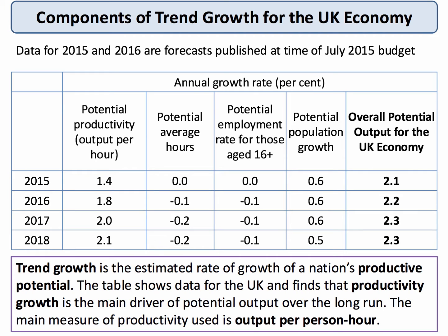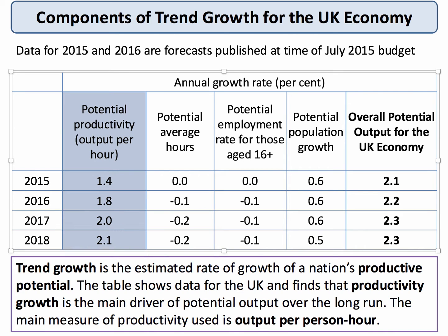Here's some data for the UK economy, which gives us some important clues. The trend growth of the UK can be broken down into basically its four main component parts. One of the key causes of growth of potential GDP is the growth of potential productivity — output per hour. If you can lift the increase in productivity, if you can make the economy more efficient, that is the main driver of potential GDP.